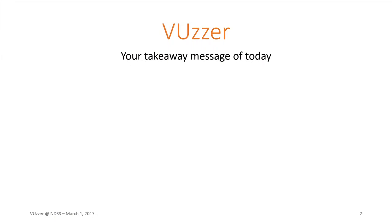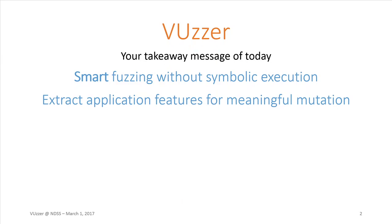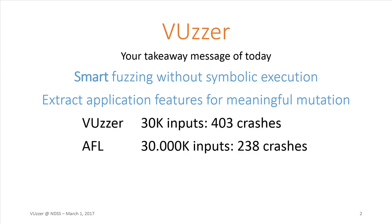If there's one thing you need to remember after my talk, it's that VUzzer will give you smart fuzzing without falling back to symbolic execution. VUzzer extracts application features and uses these for meaningful mutation on the input. As one example from our evaluation, VUzzer with only 30,000 inputs was able to crash a binary over 400 times, while AFL required 30 million inputs and only crashed it 238 times.